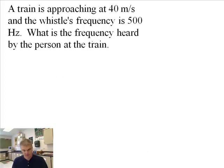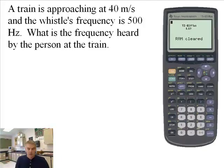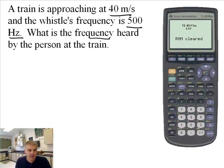Let's see if we can do a problem like that. We have a train. You need to get out your calculator. It's approaching at 40 meters per second. And the whistle's frequency is 500 hertz. What is the frequency heard by the person at the train station?